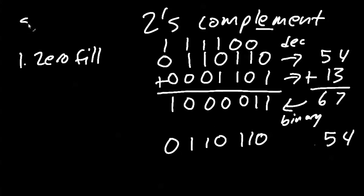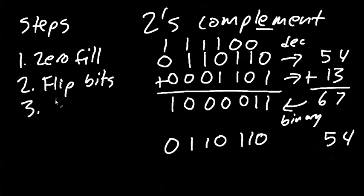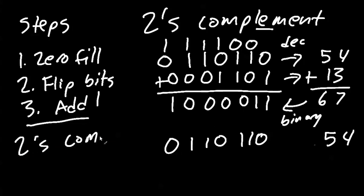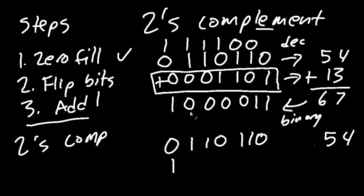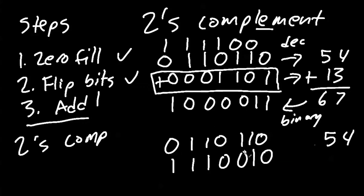Here are the steps for taking 2's complement. Step one: zero-fill. Step two: flip the bits. Step three: add 1. Once we do all three things, we have the 2's complement of our number. Starting with 0, 0, 0, 1, 1, 0, 1 (which is 13), we flip the bits to get 1, 1, 1, 0, 0, 1, 0. Then we add 1, changing that last 0 to a 1.